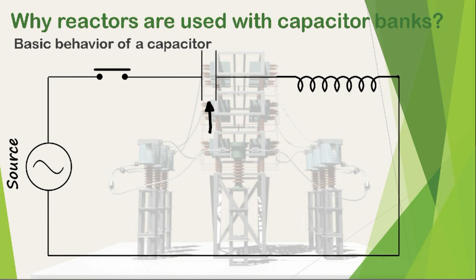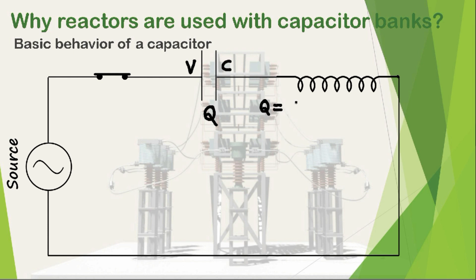Suppose this is a capacitor — meaning a capacitor bank — and this is a circuit breaker, and this portion is the rest of the power system. When we switch on this circuit breaker, the voltage of the power system will appear across the capacitor. But the capacitor is initially uncharged, so the capacitor will take charge Q from the system. Say C is the capacitance of the capacitor. From the basic formula, we know that Q equals C times V.